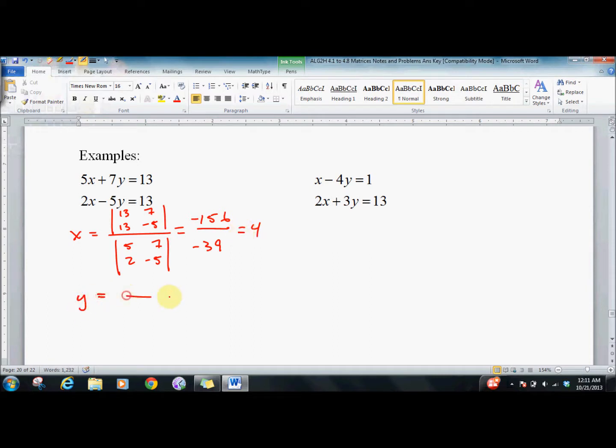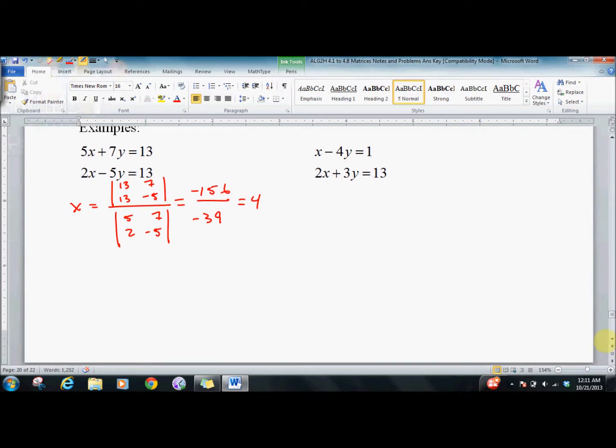Calculating that, I get x equals 4. Same thing for y, except I've already got the bottom. Spacing is an issue when working with matrices. So keep the 5 and the 2, substitute in the 13's. I get 39 over negative 39, which equals negative 1. So the solution is (4, -1).